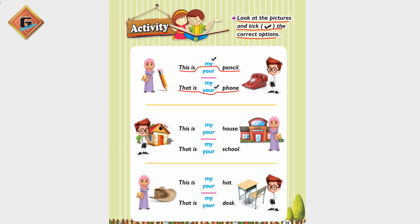The first activity sentence is 'This is my house or your house?' Look at the picture — the boy is standing with the house, so it belongs to him. We will tick 'my': 'This is my house.'